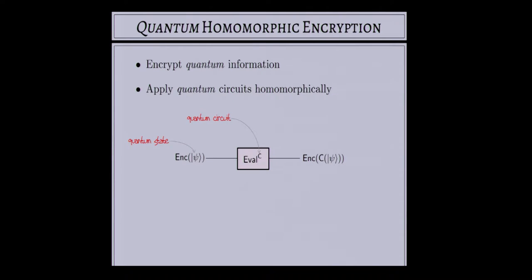For example, if I wanted to encrypt an integer and have someone homomorphically factor it for me, this would already be possible using classical fully homomorphic encryption, but it would necessarily take superpolynomial time because we don't know of any polynomial-sized classical circuit for factoring. However, we do have a quantum algorithm for factoring which takes polynomial time. So with quantum homomorphic encryption, someone could homomorphically factor my integer in polynomial time by applying Shor's algorithm.